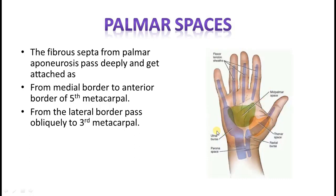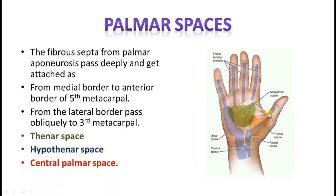A topographical representation of the spaces is seen here. The central palmar space is seen here, then the thenar space. The hypothenar space is not much present, but instead you see something called the ulnar bursa and the radial bursa projecting here. In the palm, we have three spaces: thenar space, central palmar space, and hypothenar space. Of these three, the main ones are the thenar space and the central palmar space.